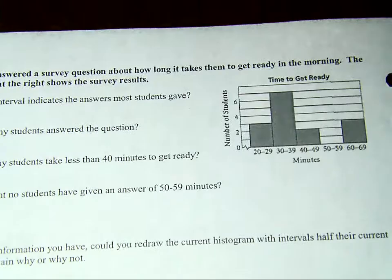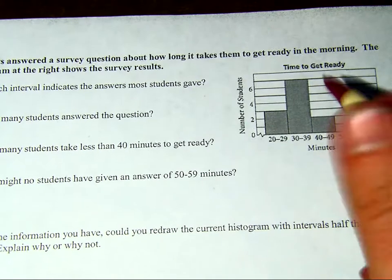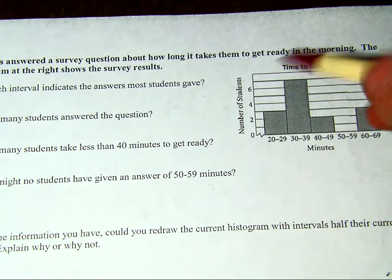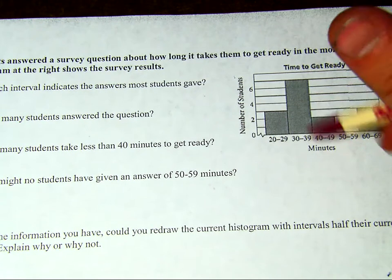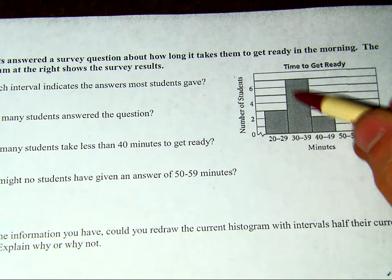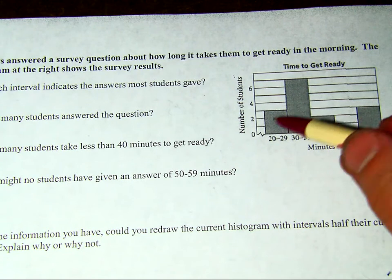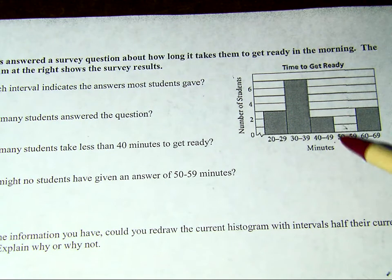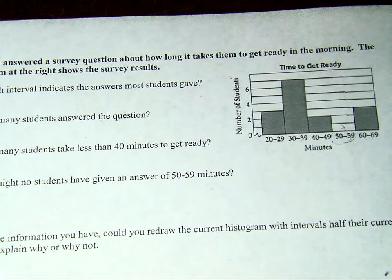Now, for histograms, they're a little different. Right here, I have this. I have the time to get ready. The number of students and the number of minutes that they took to get ready. I have a lot who took between 30 and 39 minutes. A couple that took 44 and 9, a couple that took 20 and 29. None that took that long. And then 60 and 69, they're a couple.